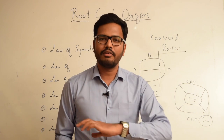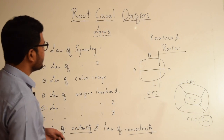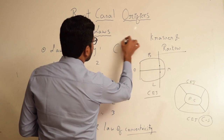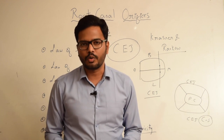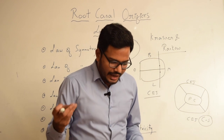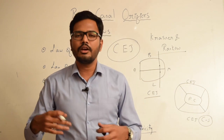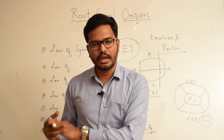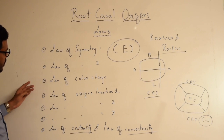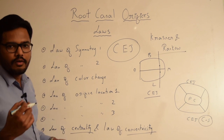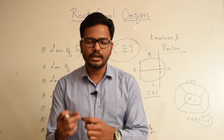To summarize, Krasner and Rancao have done extensive studies and identified CEJ as the most important landmark. There is a specific pattern in arrangement of pulp chamber walls and floor, and they gave numerous laws to assist clinicians in identifying root canal orifices. These laws are especially useful for calcified canals. The laws include: Law of Symmetry 1, Law of Symmetry 2, Law of Color Change, Orifice Location 1, 2, 3, Law of Centrality, and Law of Concentricity.